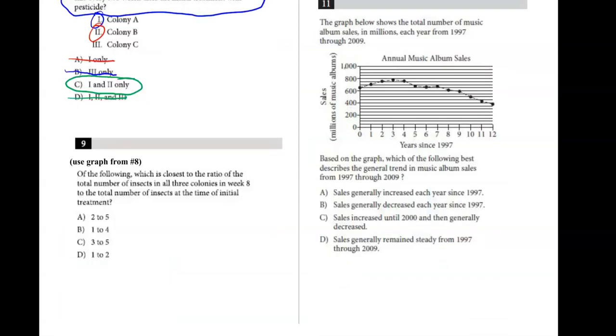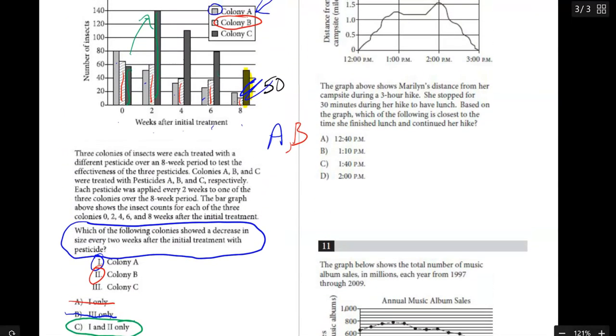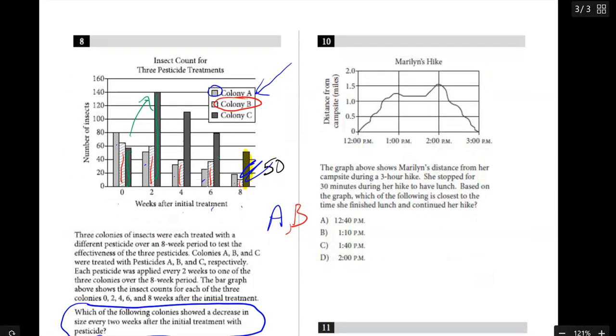All right, number nine. Of the following, which is closest to the ratio of the total number of insects in week 8 to the total number of insects in the initial treatment? So what I need to do for this one is I need to set up a fraction, and I need to do the total from week 8 compared to the total from week 0. So we're going to scroll up here to this top chart. Let's try to add up these totals. Looking at week 8, I'm saying that colony C is somewhere around 50, it's probably good enough. Colony B looks like it's somewhere around 10, and then colony A there is almost 20. Let's just call it 20.